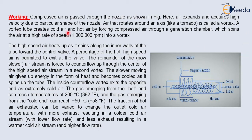A vortex tube creates cold air and hot air by forcing compressed air through a generation chamber. The compressed air is passed through this vortex chamber, which spins the air at a high rate of speed — approximately 10 lakh RPM — into a vortex. The high speed air heats up as it spins along the inner wall of the tube towards the control wall.